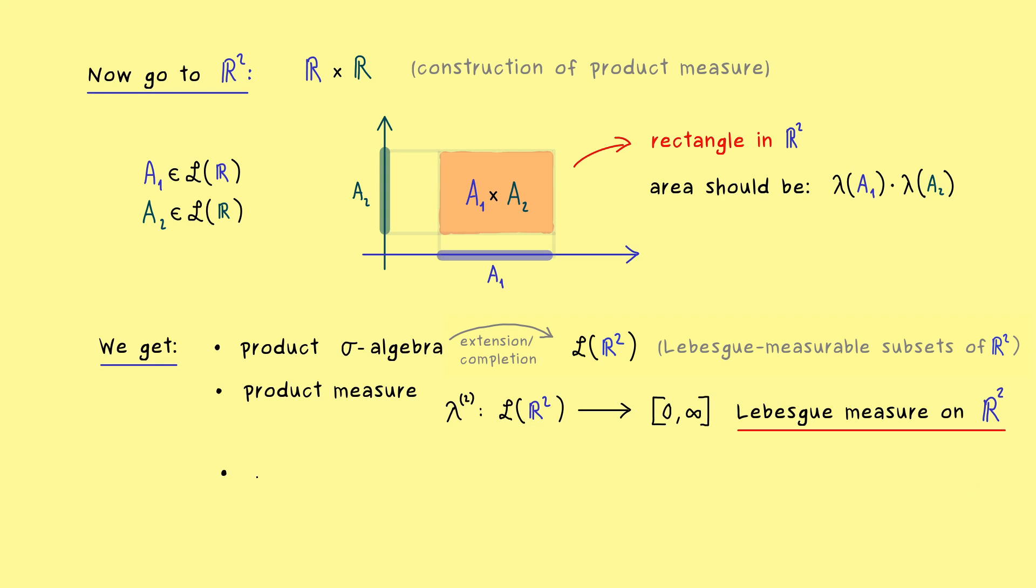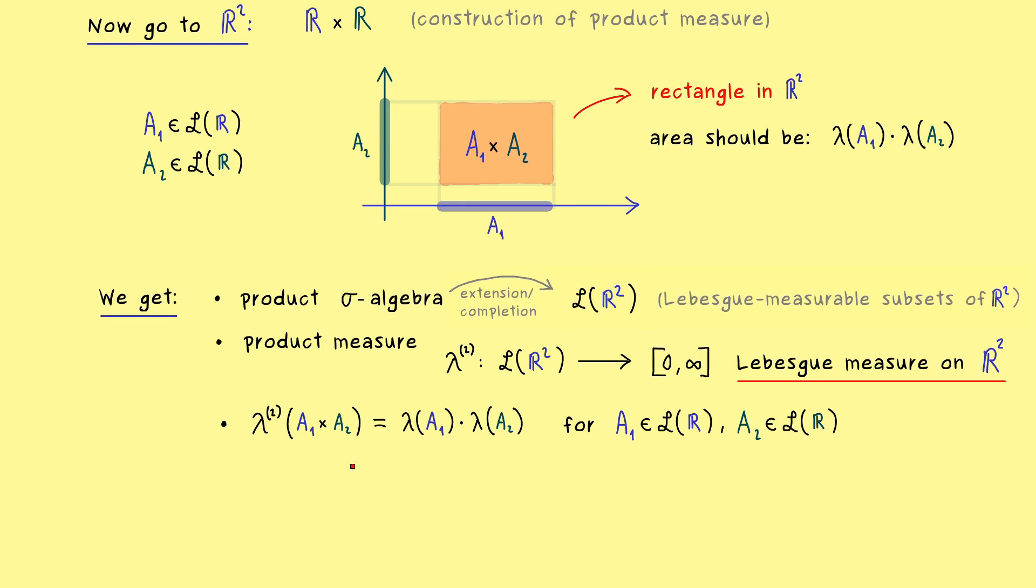And we already know one important property, namely we know what it does for rectangles. So this means, if we put in A1 times A2, we get out the product of the one-dimensional Lebesgue measures. Hence, for such generalized rectangles, the calculation of the area is really simple.